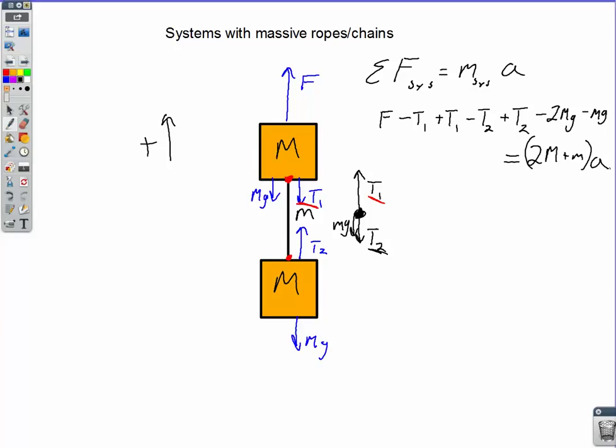Now, again, we didn't need to write these tensions because they do cancel out. There are the third law pairs in there canceling out for us. So what we have is the upward applied force minus the downward weight forces is equal to the total mass of the system times A.